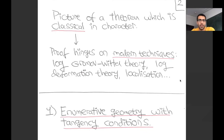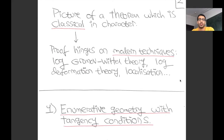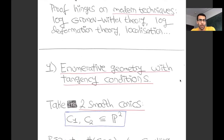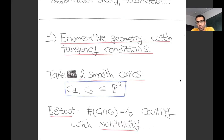The types of questions we're interested in I would call enumerative geometry with tangency conditions. The story starts, as stories often do, with Bezout's theorem. Here's a very simple example: if I pick two smooth conics in the plane, we all learned that they intersect in four points, but that's only strictly true if you count them with the correct multiplicities. If I chose C1 and C2 generically, they will just intersect transversely in four distinct points.